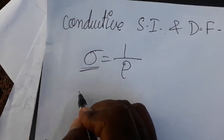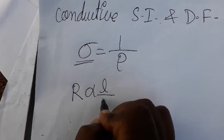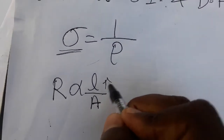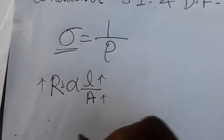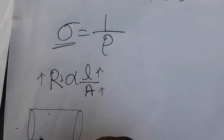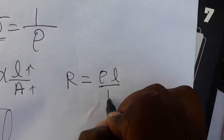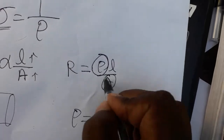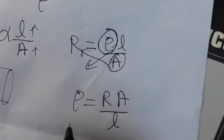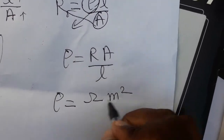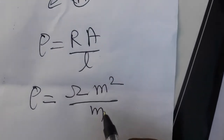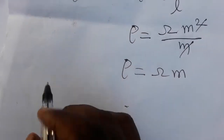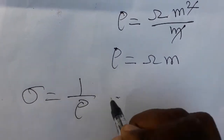Before going to conductivity, you should know resistivity, and before resistivity you should know resistance. Resistance is directly proportional to length and inversely proportional to the area. When the length is more, resistance will be more; when the area is more, resistance will be less. So R is equal to rho times L by A. Therefore, resistivity rho is equal to R times A by L. The SI unit of resistivity will be ohm meter square divided by meter, so resistivity is ohm meter.